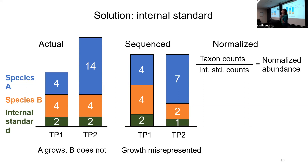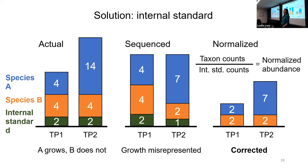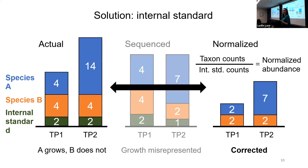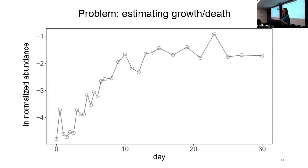You do that by dividing the internal standard counts by each species' counts to get something called a normalized abundance. At the end, the actual abundances aren't the same as what they would be in the environment, but the relationships between those abundances are corrected — and that's what's really important if I'm interested in growth and death dynamics. So we can bypass this compositionality issue. Now I have a way to get the data I need, but the next problem is how to estimate growth and death.